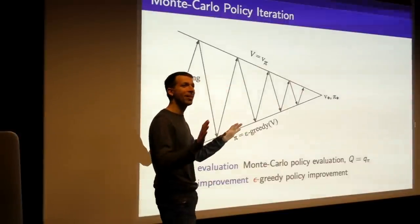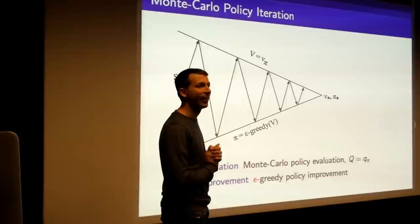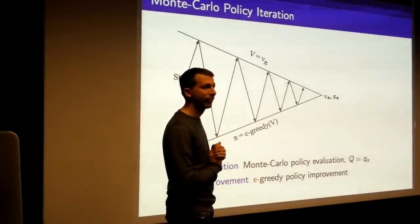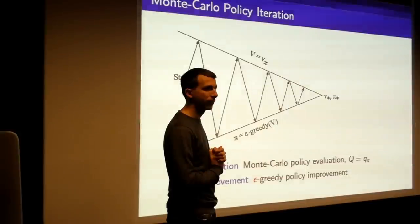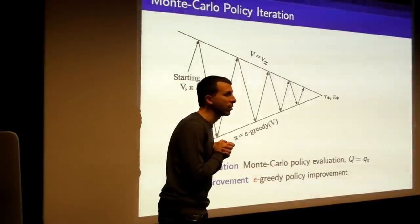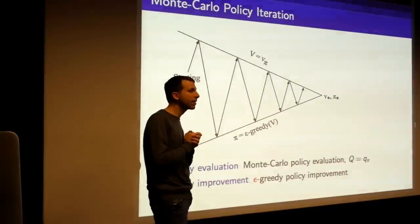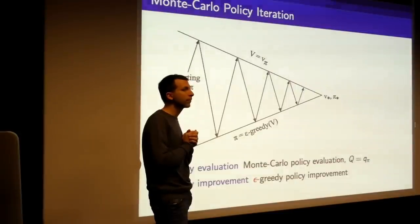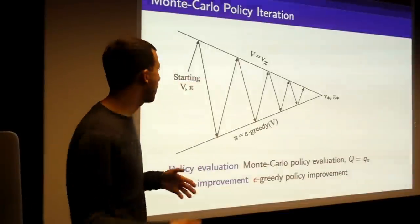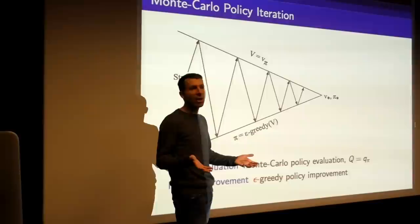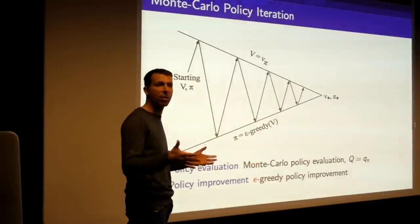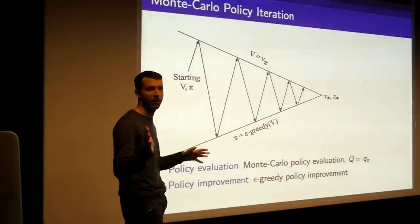A question was raised: this proof doesn't tell us anything about how much to explore or how epsilon affects the real problem. Correct — this doesn't tell us how rapidly we should be exploring. In general, you need to choose a schedule for epsilon and make sure it decays to zero roughly. We'll see a little more about that shortly.